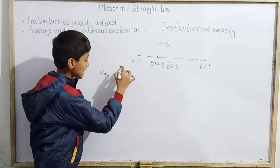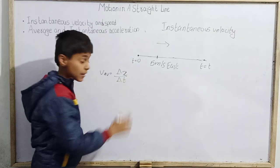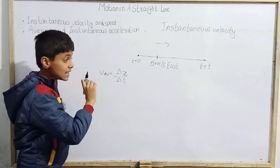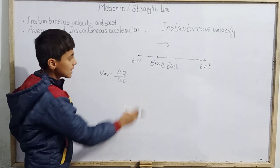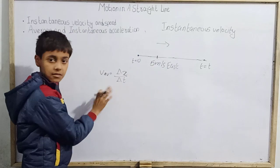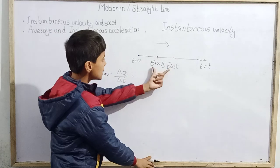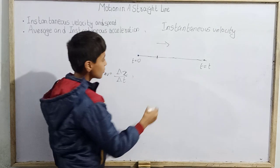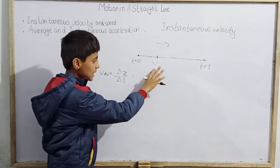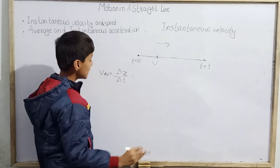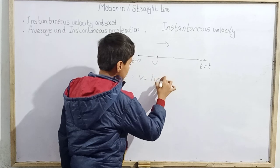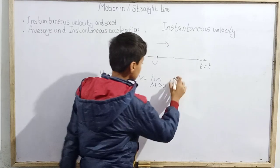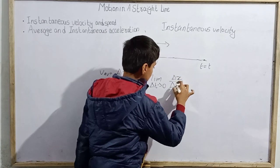If anyone asks the velocity at this instant, and we try to apply limits: average velocity is delta x by delta t, where delta t is for the entire journey — a very long duration, a time interval. Now if I want to find velocity at a specific instant, I write: velocity v equals limit as delta t tends to 0 of delta x divided by delta t.